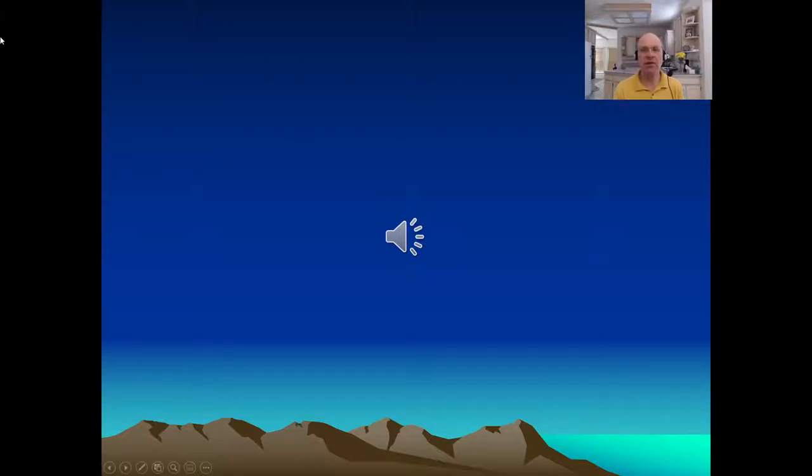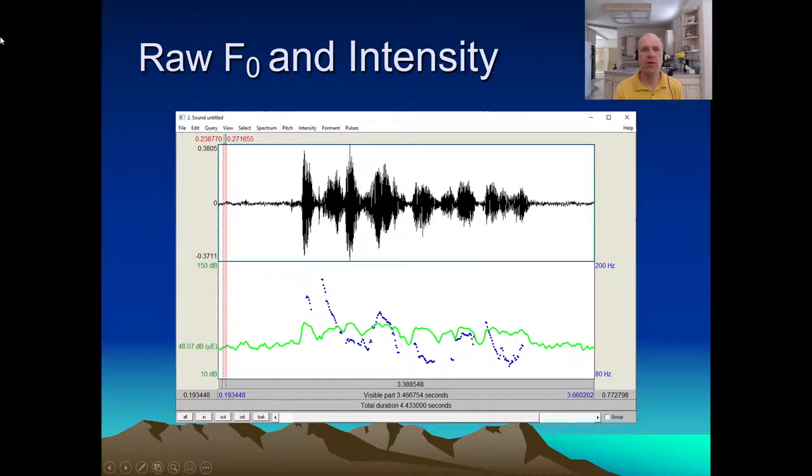We've already seen pitch and energy plots, with the blue dots for pitch and the green line for intensity. It's not that pitch and loudness are uniquely important, but the other prosodic properties—creaky voice, lengthening reduction, and so on—are even harder to compute reliably, and so they're rarely visualized. There's a huge unmet need here.